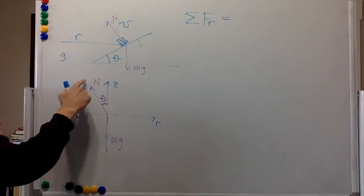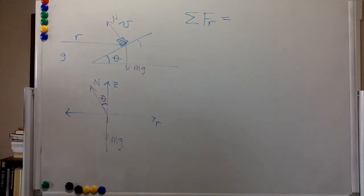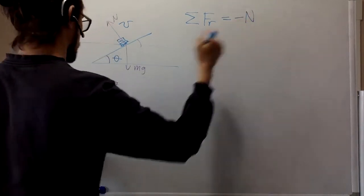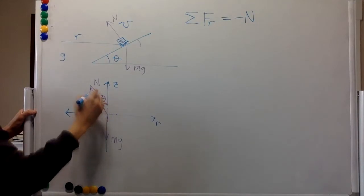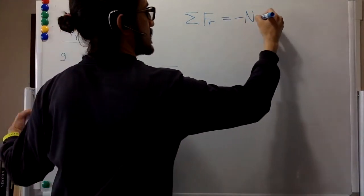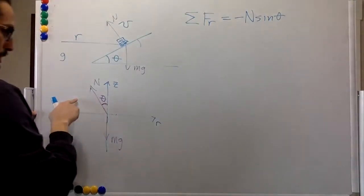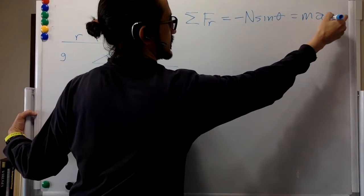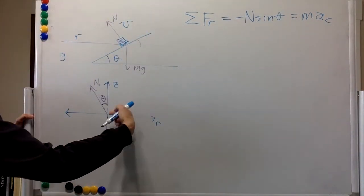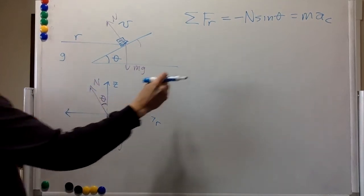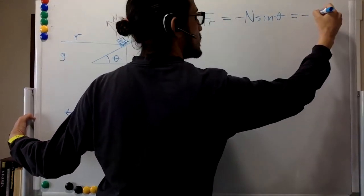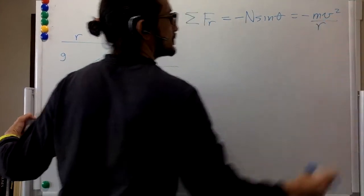So it's just the normal force, the contribution of the normal force to the radial direction. So this is going to be minus the normal force, and in the radial direction it is going to be the sine, so sine theta. And that's it, right? That's going to be equal to mass times acceleration. The acceleration is centripetal and it's towards this side, so it's going to be minus mv squared over r.